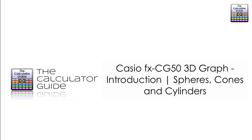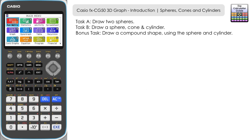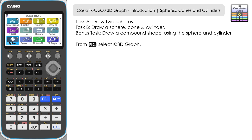Hello and welcome to the Calculator Guide video on the Casio FX-CG 50: 3D graph introduction — spheres, cones and cylinders. In this video we're going to draw two spheres on the same screen, then draw a sphere, a cone and a cylinder on the same screen. This is very much an introduction to the 3D graph mode available on the FX-CG 50, and we're going to explore some of the features together. Let's start by accessing 3D graph.